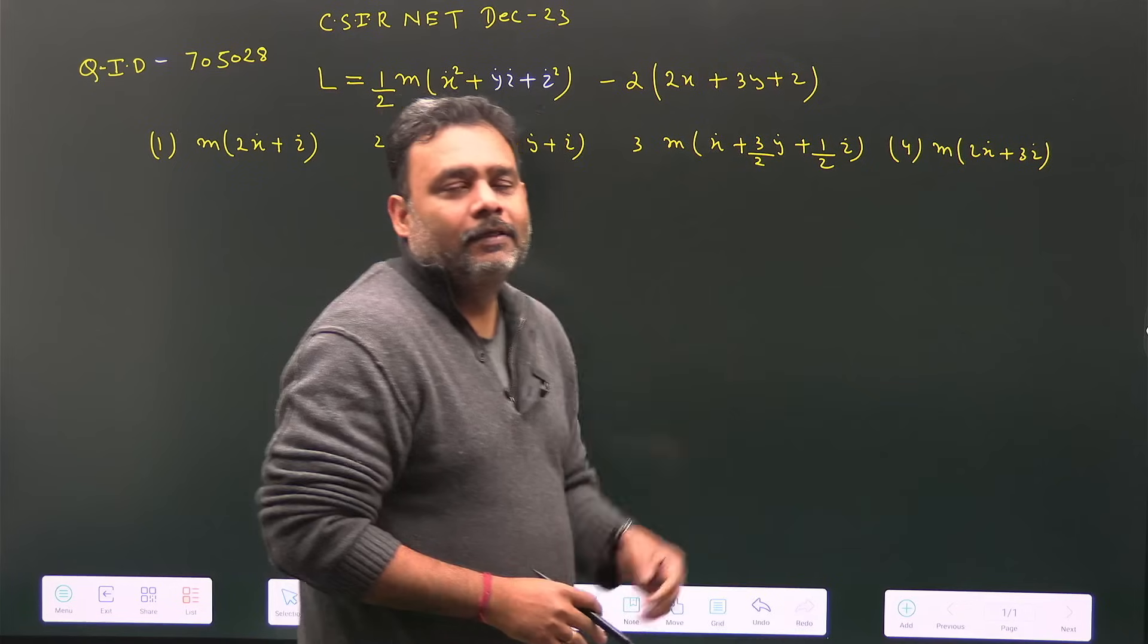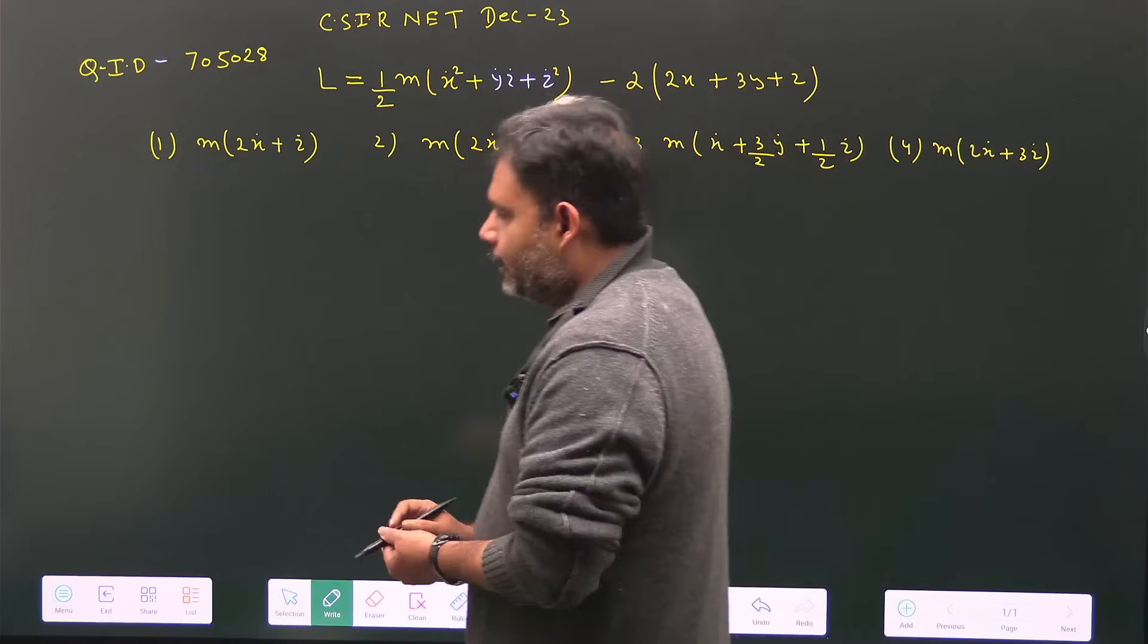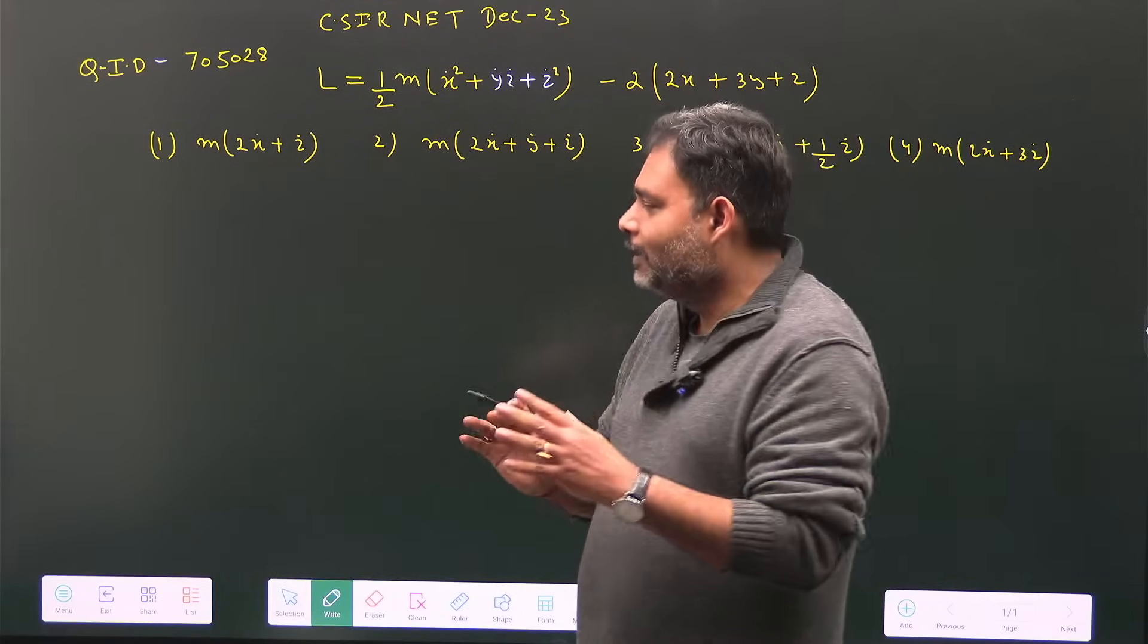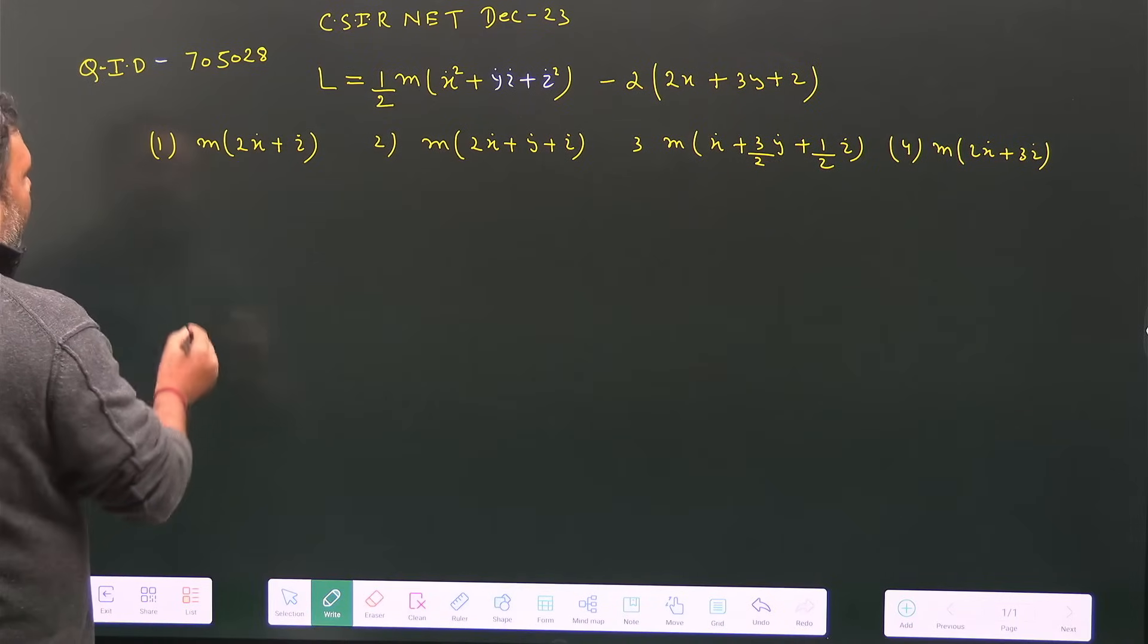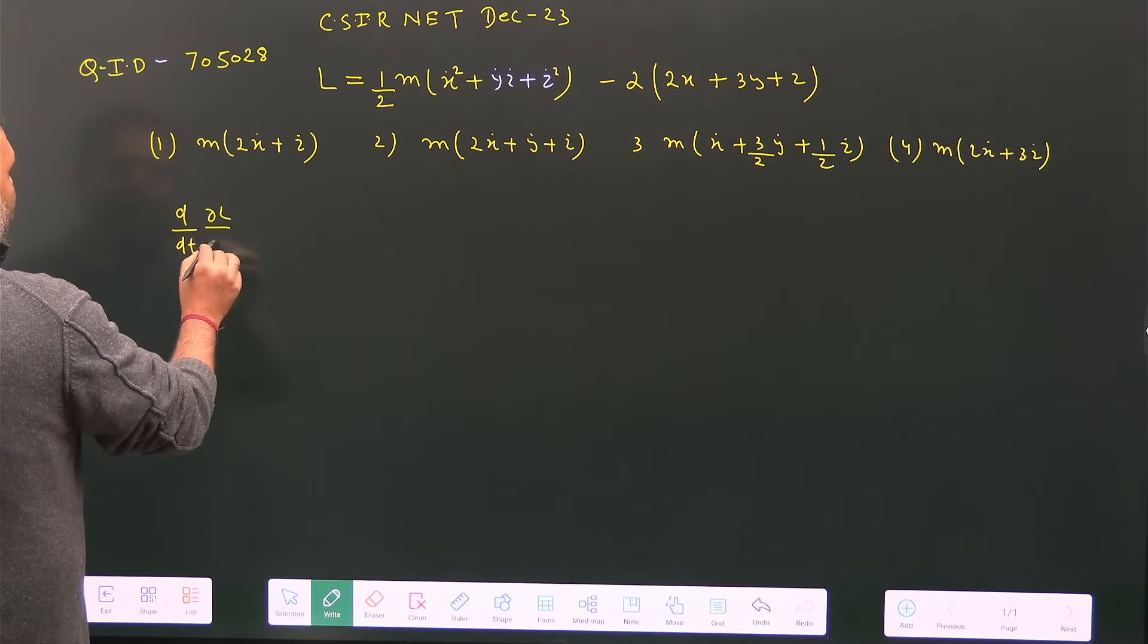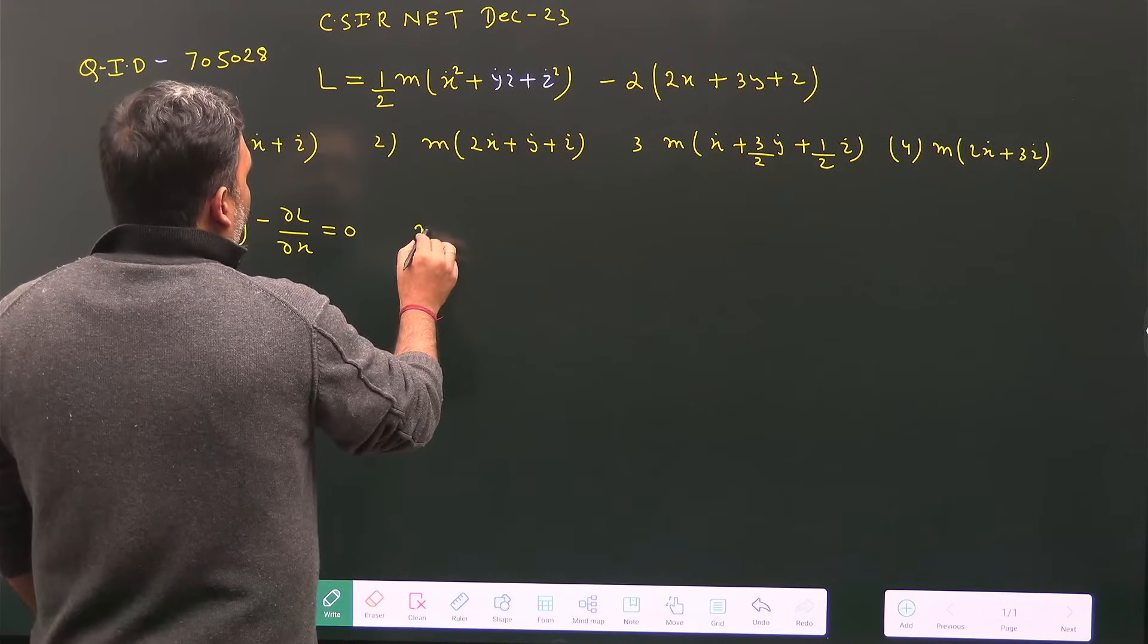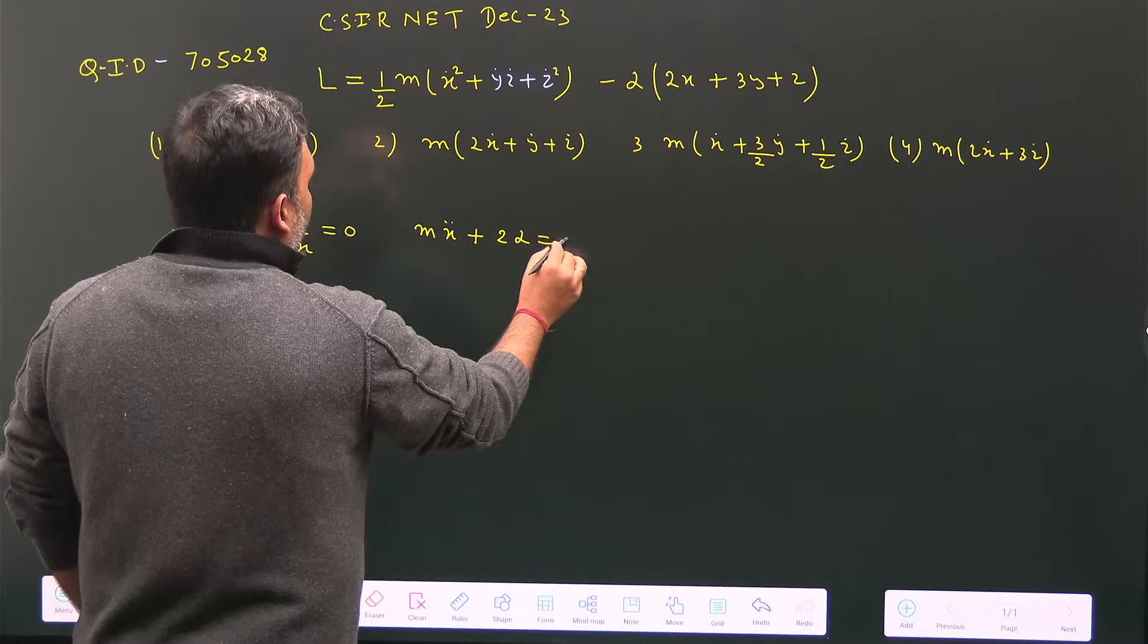So let's approach this problem straightforwardly. We'll write the equations of motion for x, y, and z, then analyze which one is correct. For x: d/dt(∂L/∂ẋ) - ∂L/∂x = 0, giving us mẍ + 2α = 0.